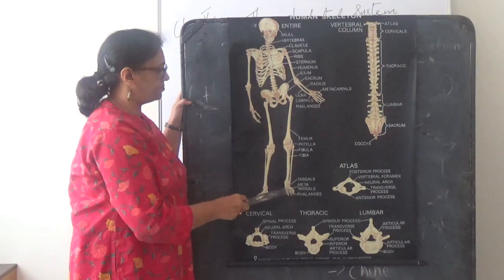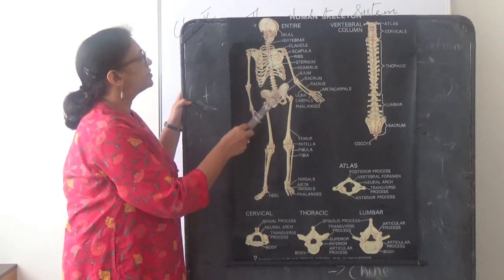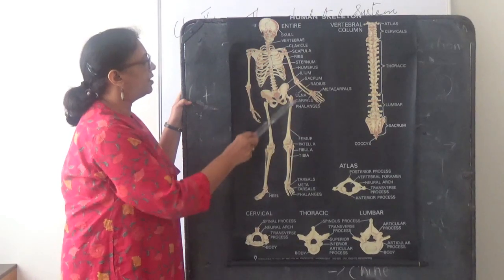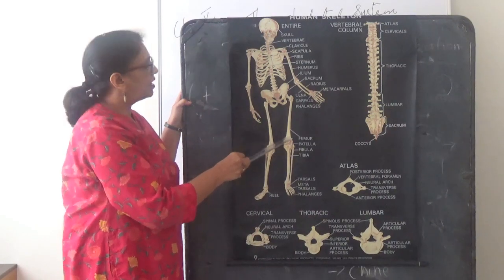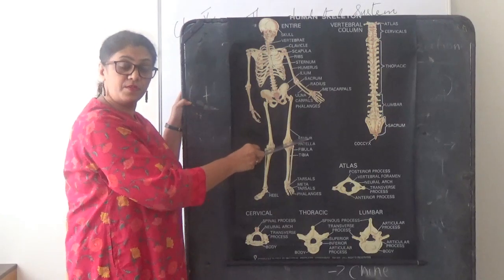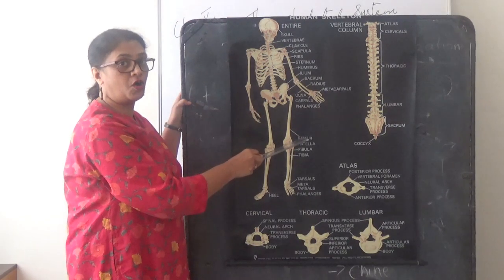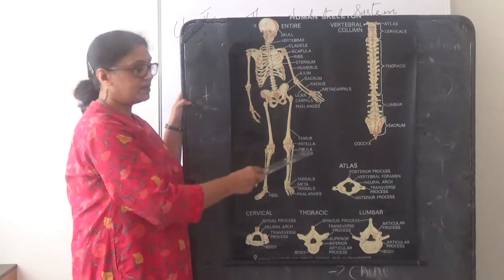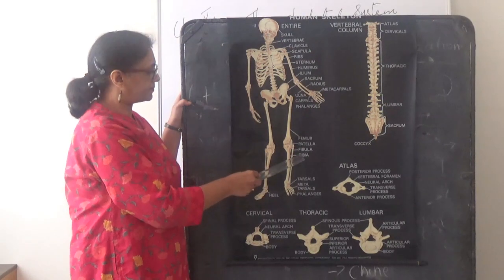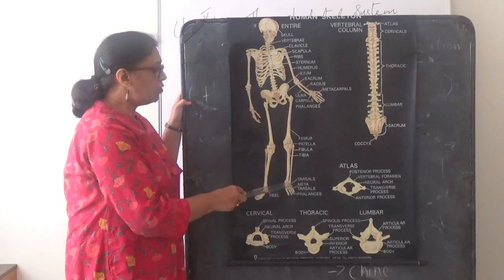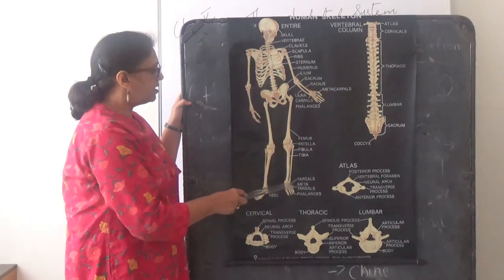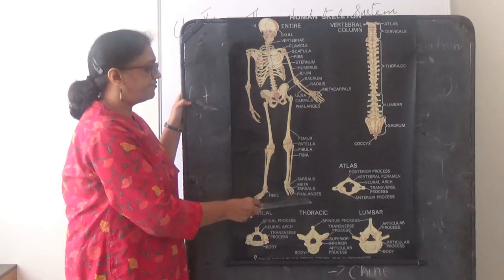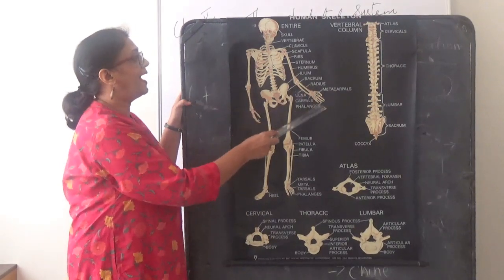Now the lower limbs are attached to the spine with the help of the pelvic girdle. The upper part of the leg is called the thigh; in the thigh there is a single bone called the femur. The femur is the longest and strongest bone in your body. In the region between the knee and the ankle we have two bones: tibia and fibula. Tibia is also called the shin bone. In the foot, the bones at the ankle are called tarsals, the bones in the midfoot are called metatarsals, and the bones in the toes are called phalanges. Remember, your foot has toes and your hand has fingers.